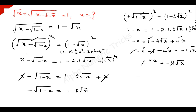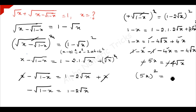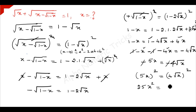The two negatives cancel. Now, to remove the square root we square both sides again. So 5x whole squared is equal to 4 times square root of x, whole squared. 5 squared is 25, and x squared is x squared, equal to 4 squared is 16, and square root of x whole squared is x itself.